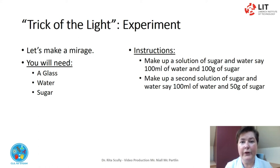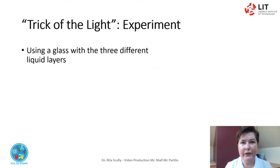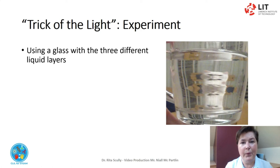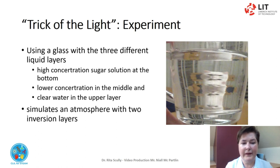Pour the high concentration sugar solution into the glass. Then pour in the second lower concentration sugar solution. And then top off with clear water in the upper layer. This simulates an atmosphere with two inversion layers. Look at an object through the glass to see the mirage effect. In this case, we are looking at a white cat.